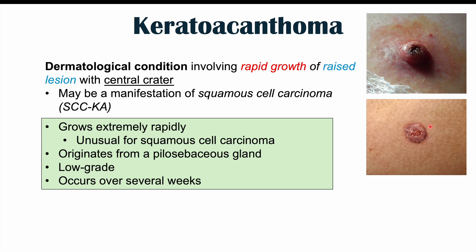There are particular key unique characteristics with regards to this skin lesion. It grows extremely rapidly, which is unusual for squamous cell carcinoma. It originates from the pilosebaceous unit, which is the hair follicle with its associated sebaceous gland. It is low grade, so it's less likely to spread and metastasize, and this rapid growth occurs over several weeks — very rapid growth.